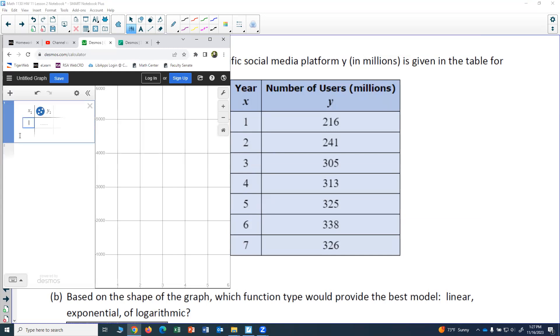All of my x values go in column one, so one through seven. And then in column two, all of my y values: 216, 241, 305, 313, 325, 338, and 326.